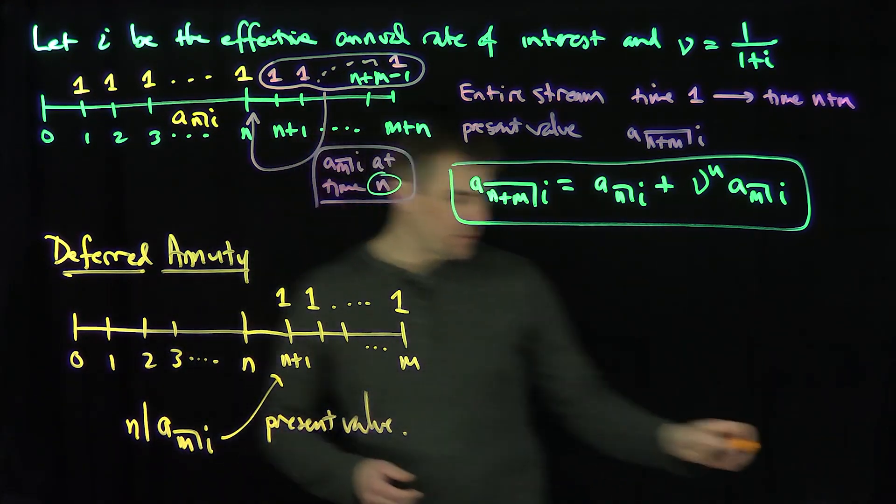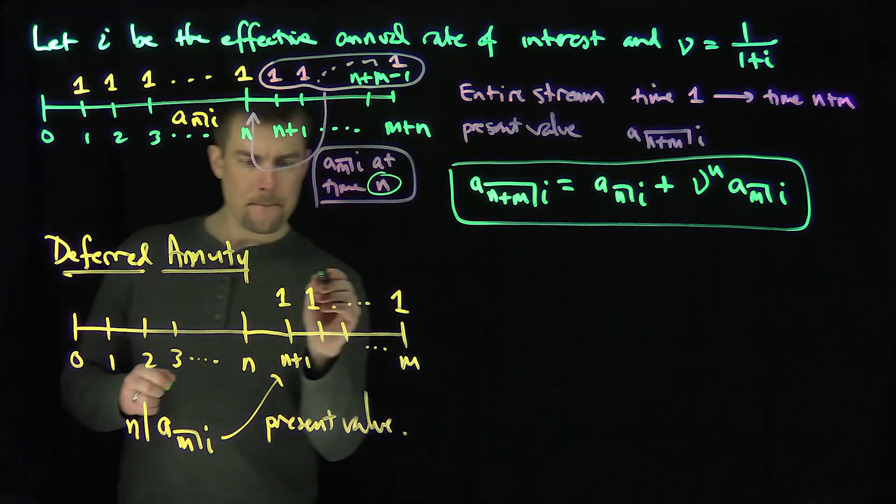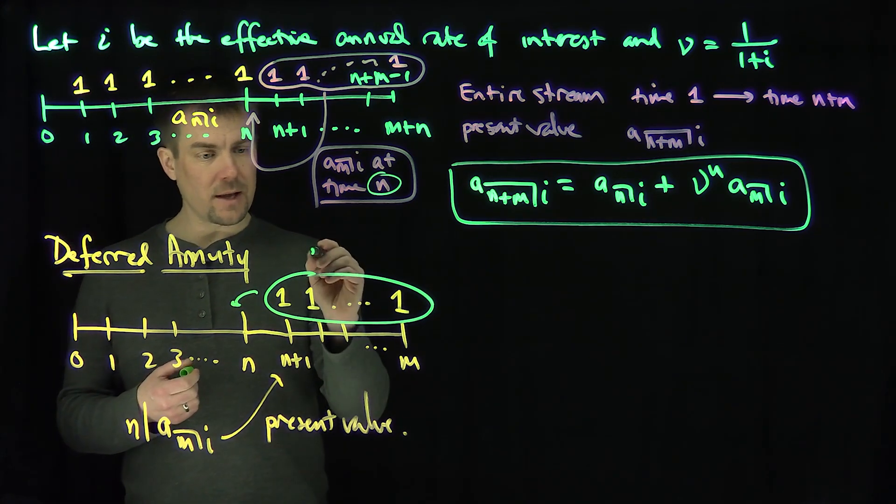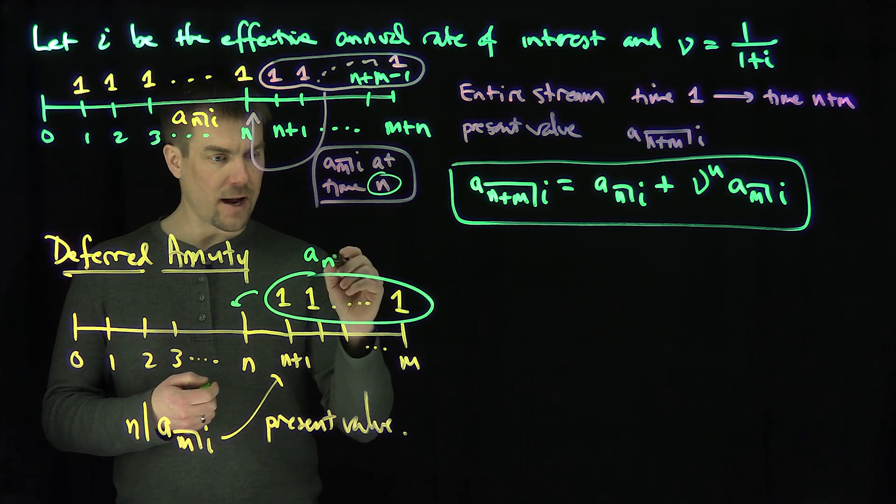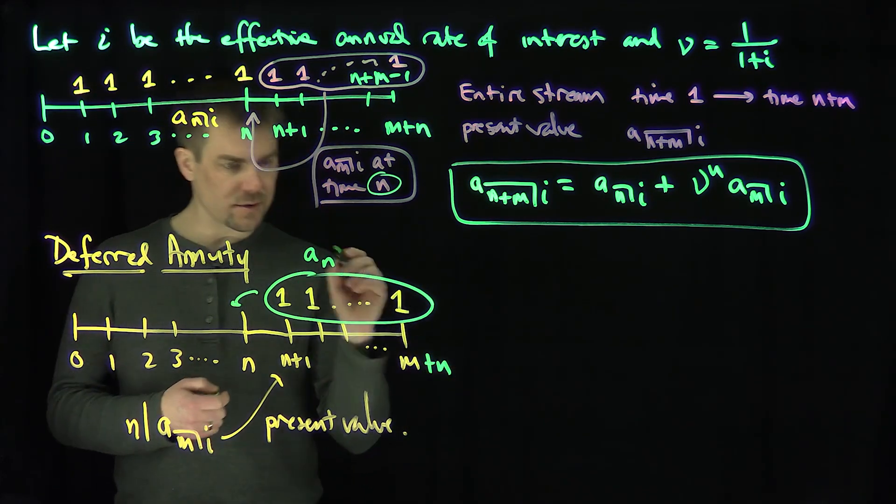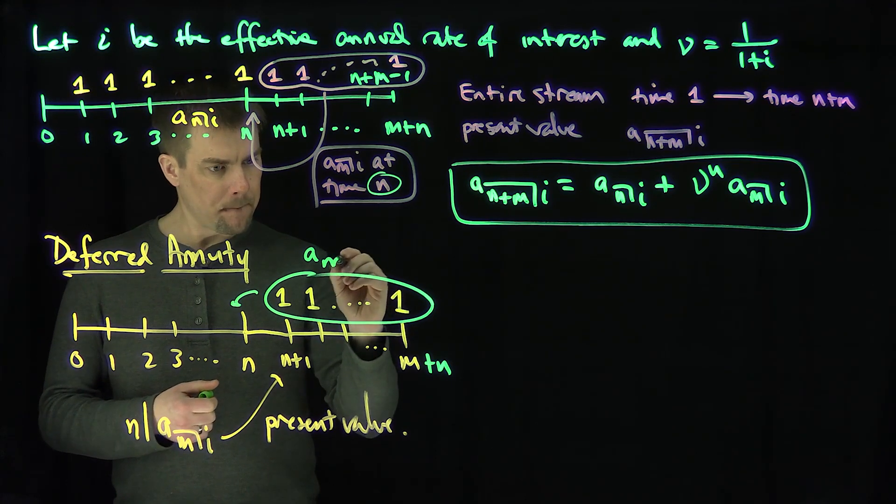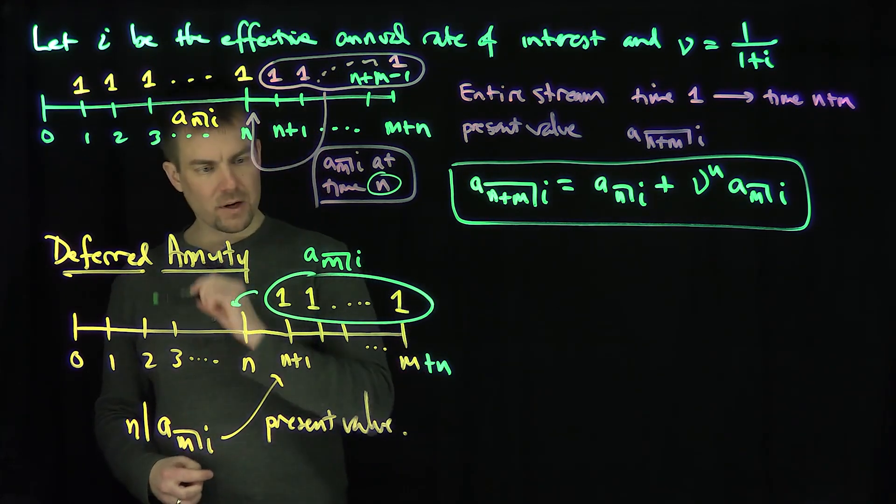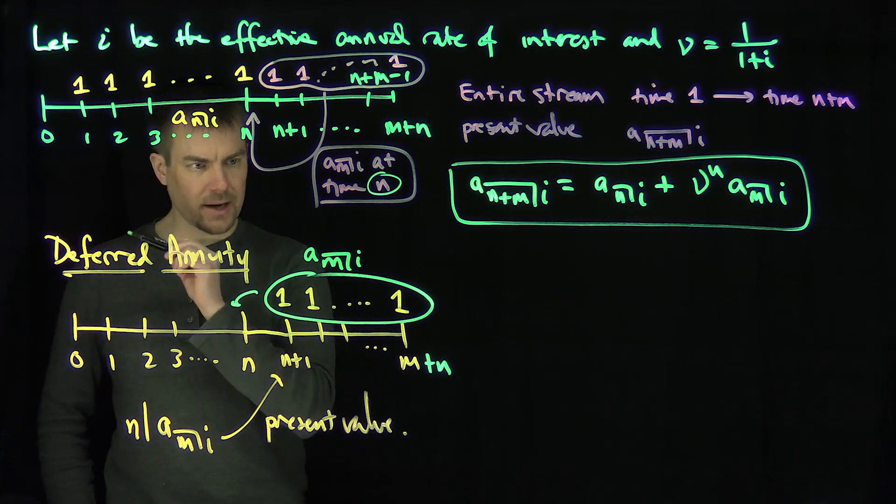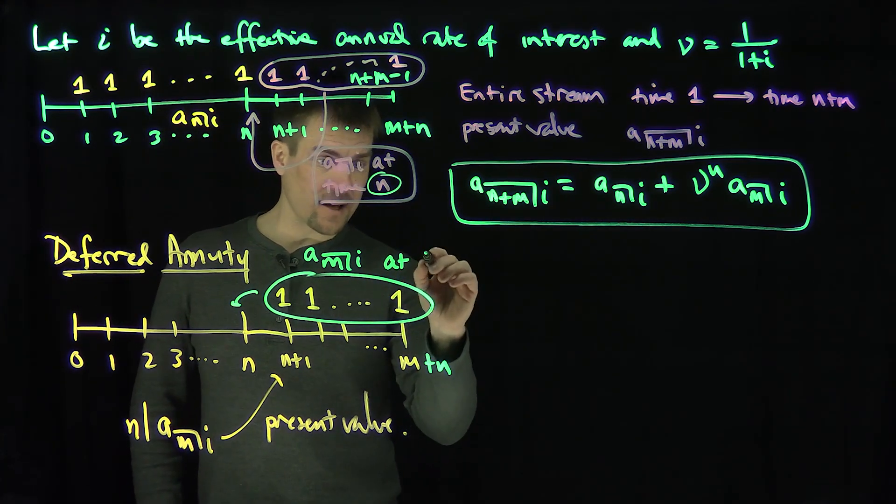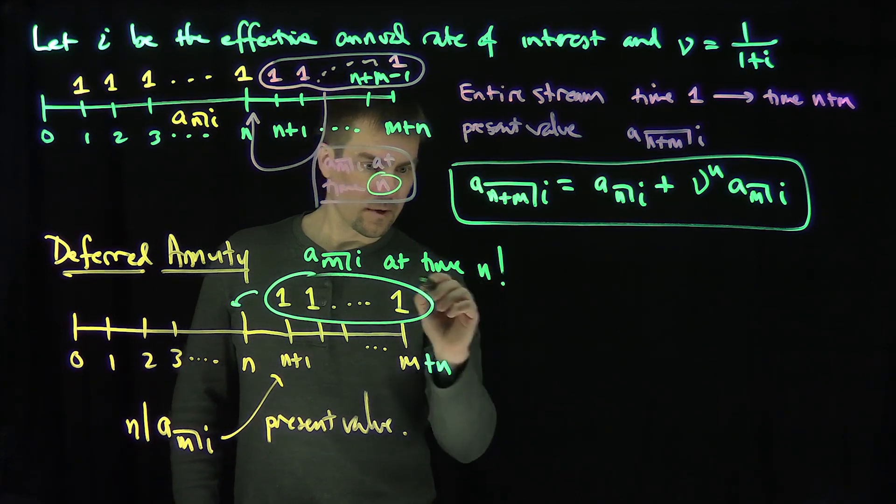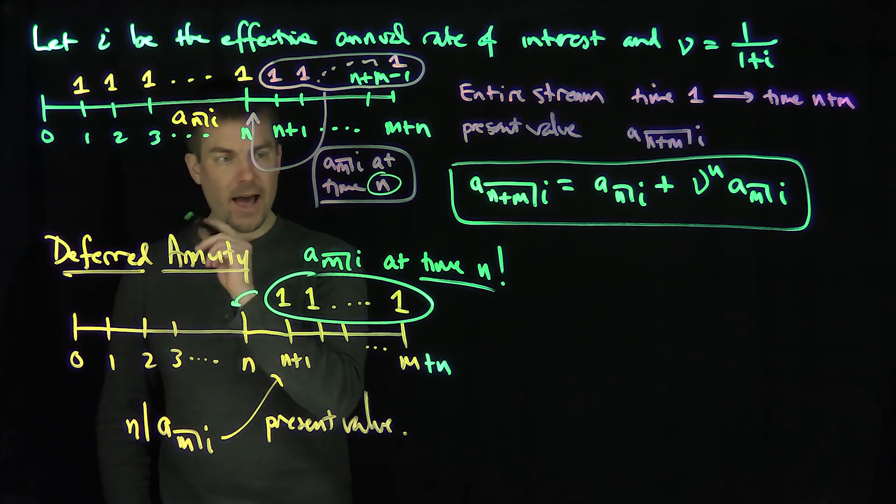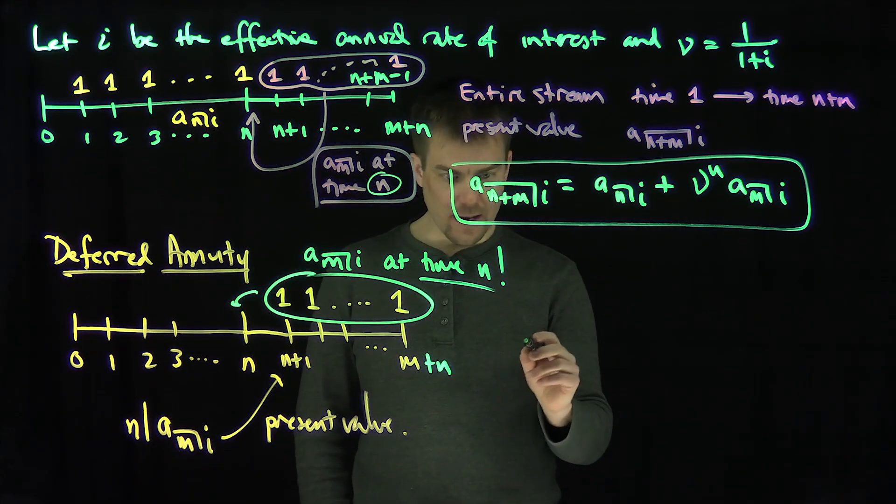How do we do this? If we were to take this payment stream of all those ones and bring it back to time n, that would simply be a_m,i. That's what that payment stream would be at time n. But we're not at time n, we're at time zero. I need to bring that back to time zero.